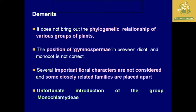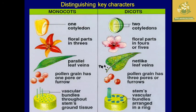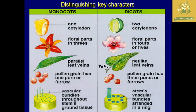Key distinguishing characters of monocots versus dicots: in monocots there is only one cotyledon, while dicots have two cotyledons. Floral parts are in threes in monocots, and in fours or fives in dicots. Monocots have parallel leaf venation — for example, rice — while dicots have net-like or reticulate leaf venation, for example black gram and green gram. Pollen grains in monocots have one pore or furrow, while dicots have three or more pores and furrows. Vascular bundles in monocots are scattered through ground tissue, while in dicots they are arranged in a ring shape.